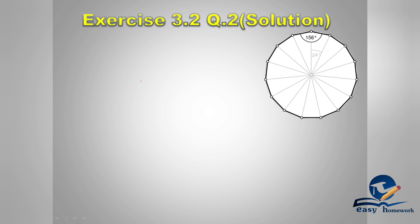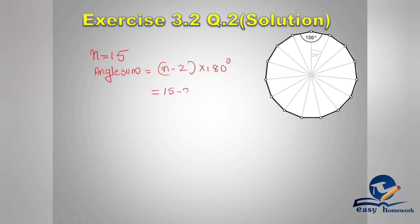Now let's go to Exercise 3.2, Question 2, Part B. We are going to find the exterior angle for an n-sided regular polygon where n equals 15. Using the angle sum property: (n-2) × 180 = (15-2) × 180 = 13 × 180 = 2340 degrees.